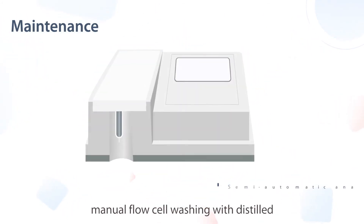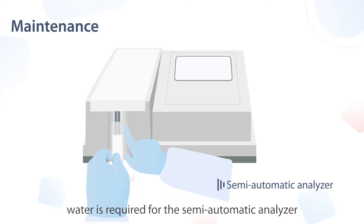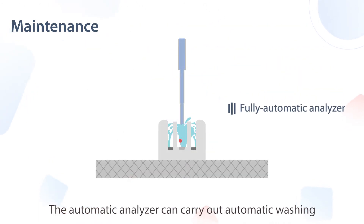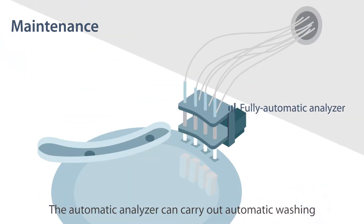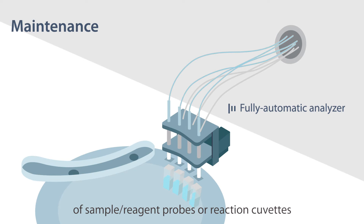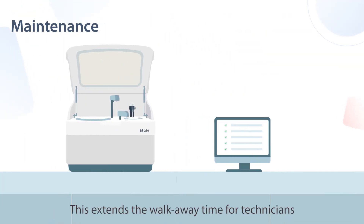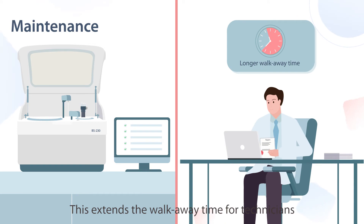When switching from one test to another, manual flow cell washing with distilled water is required for the semi-automatic analyzer. The automatic analyzer can carry out automatic washing of sample reagent probes or reaction cuvettes, which extends the walk-away time for technicians.